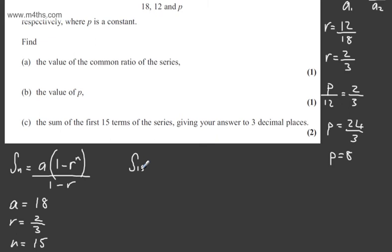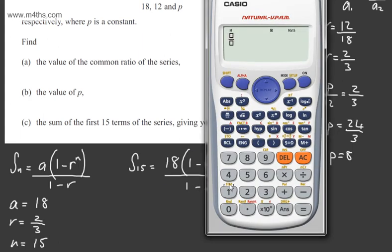We simply need to sub this in, so we can say the sum of the first 15 terms will be a, which is 18, 1 minus, and then we'll have 2 thirds to the power of n, which is 15, and then we'll have 1 minus the common ratio of 2 thirds. I'm simply going to substitute this into a calculator and then round my answer to 3 decimal places. So we'll have 18 multiplied by 1 minus, and then we'll have the fraction of 2 thirds, which we need to raise to the power of 15.